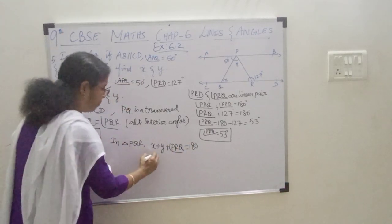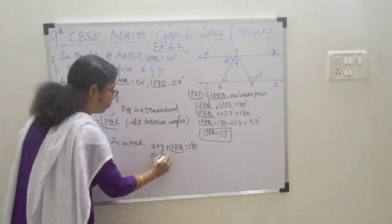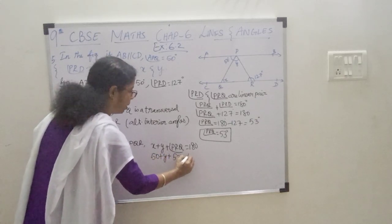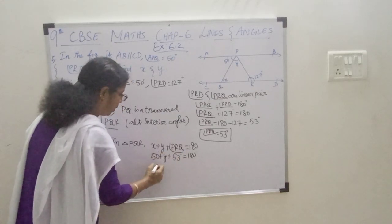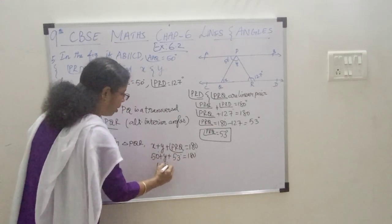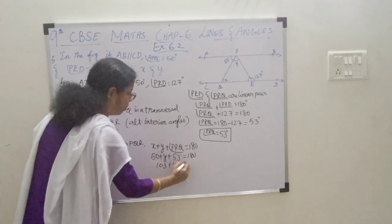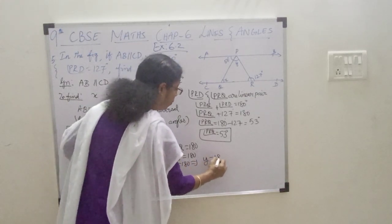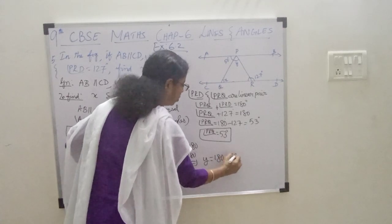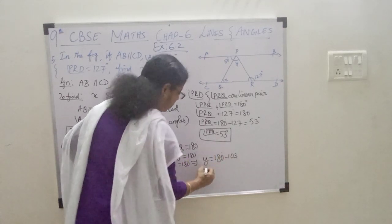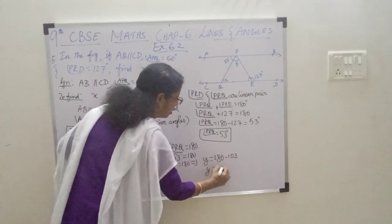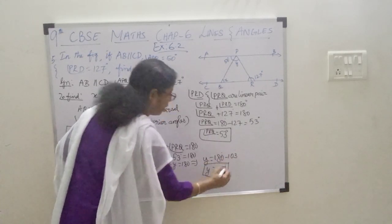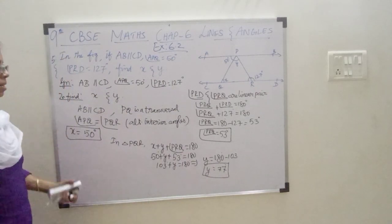This X is found as 50. So, 50 plus Y plus 53 equals 180. That is, 50 plus 53 is 103, plus Y equals 180. This implies Y equals 180 minus 103, that is Y is equal to 77 degrees. Hence, we found Y as 77 degrees.